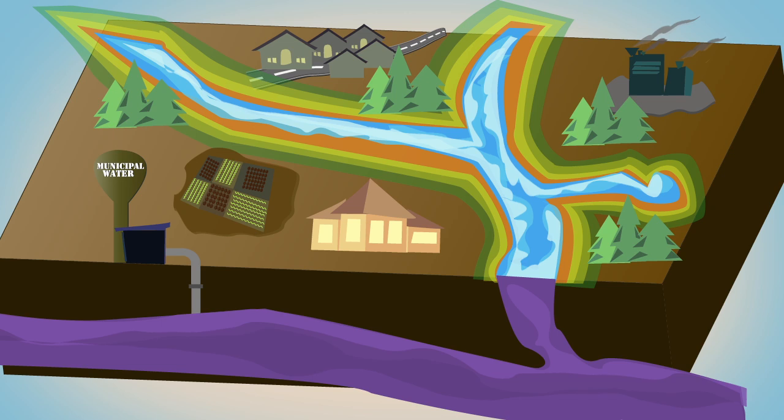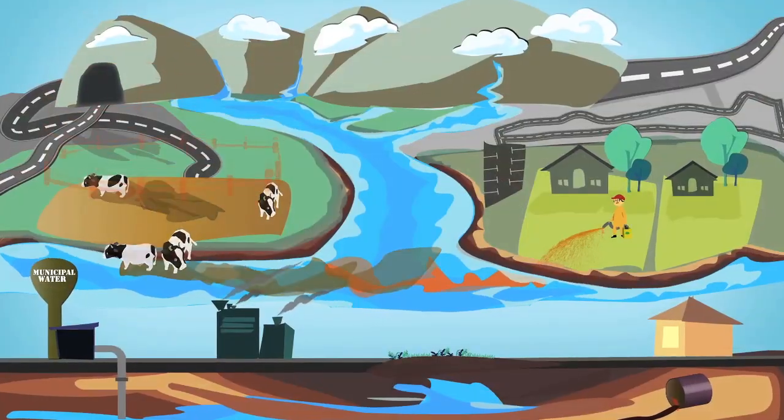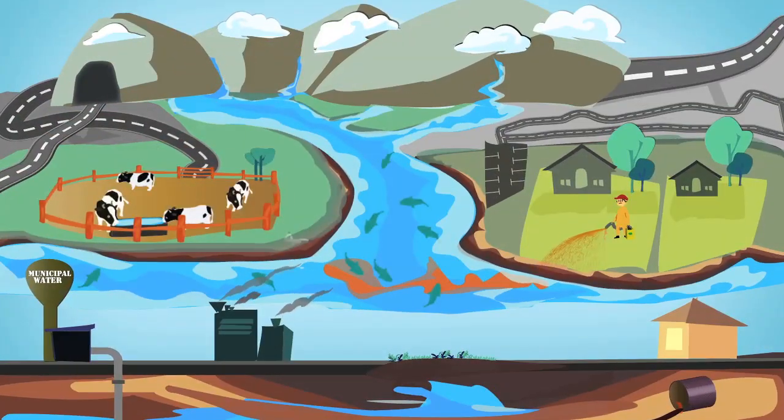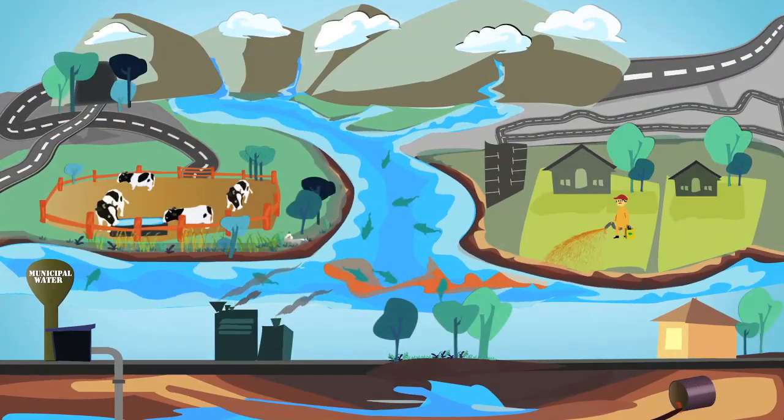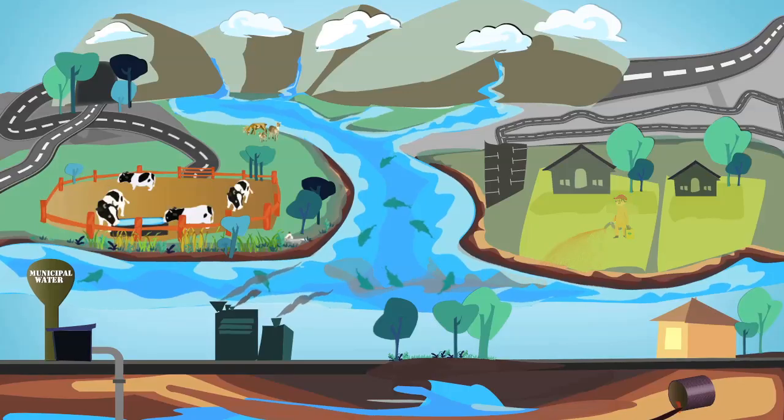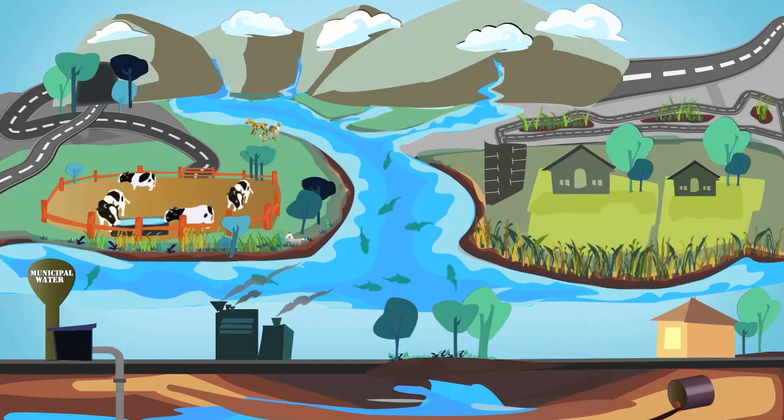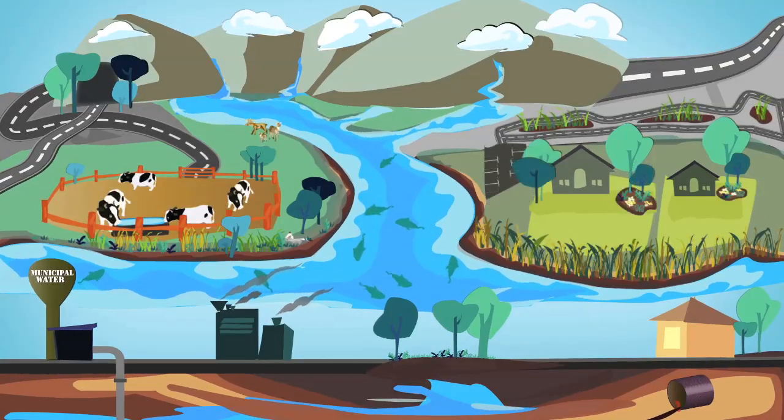Fortunately, it doesn't have to be this way. We can prevent contamination from happening. We can use best management practices on farms and industrial sites. We can manage runoff from roofs and driveways by naturalizing our yards.